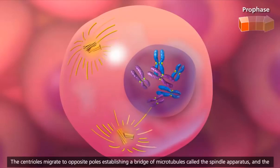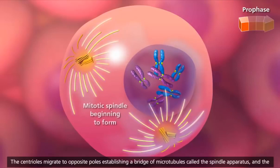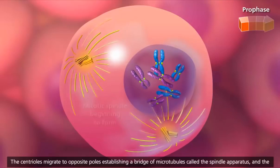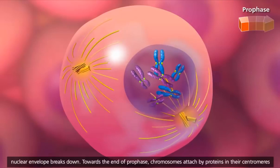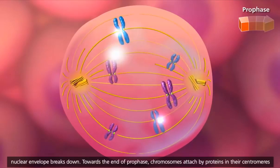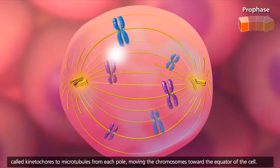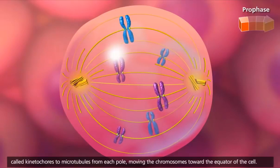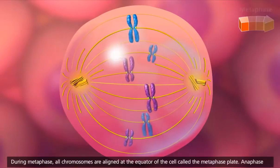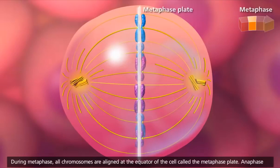The centrioles migrate to opposite poles, establishing a bridge of microtubules called the spindle apparatus, and the nuclear envelope breaks down. Towards the end of prophase, chromosomes attach, by proteins in their centromeres called kinetochores, to microtubules from each pole, moving the chromosomes toward the equator of the cell. During metaphase, all chromosomes are aligned at the equator of the cell, called the metaphase plate.